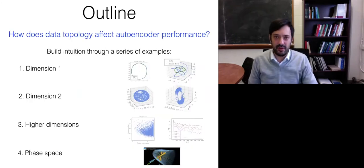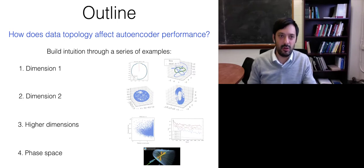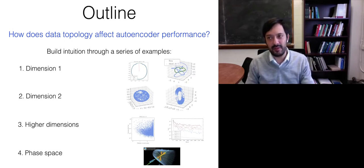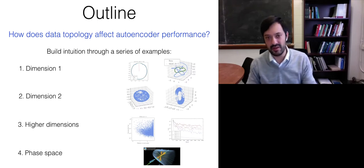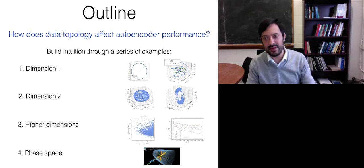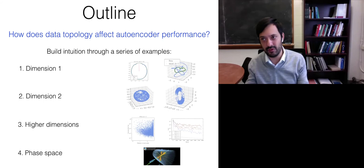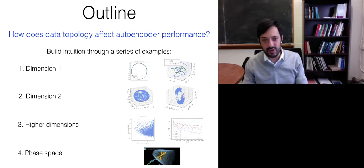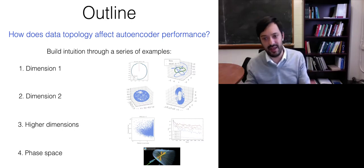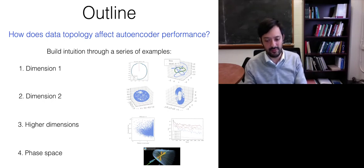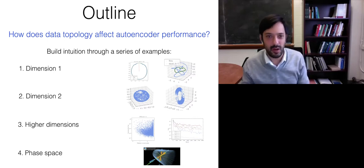With those preliminaries out of the way, the outline of my talk is: I'll be trying to answer how does the topology of your data set affect the performance of an autoencoder. We'll build intuition through a series of low dimensional examples, nice because they illustrate all the essential points and we have some analytic control. We can open up the black box of the neural network and study the evolution of all the network parameters analytically, at least for dimension one. Then I'll show pretty pictures in dimension two, introduce a tool to visualize how much tearing and stretching is happening in the data manifold, and at the end I'll come back to phase space, which is the example most interesting for high energy physics.